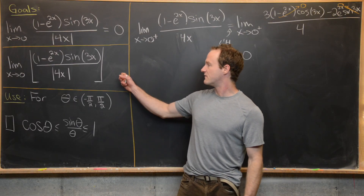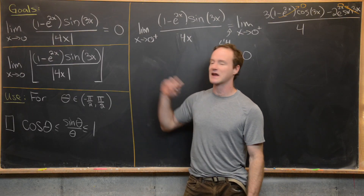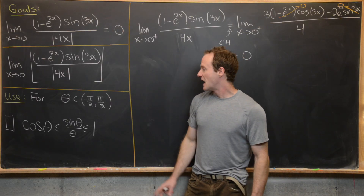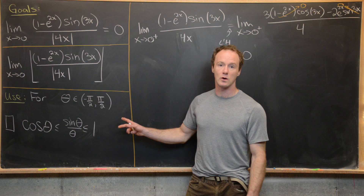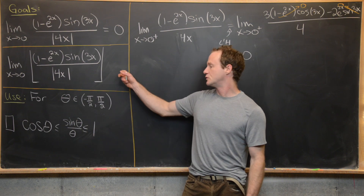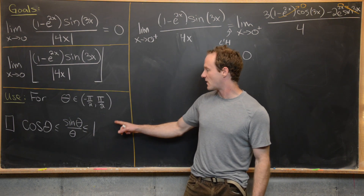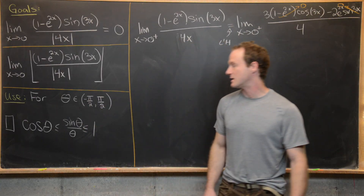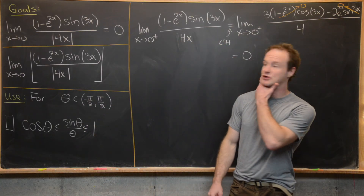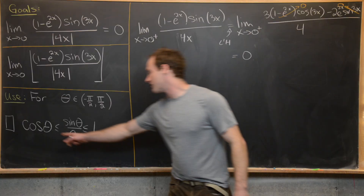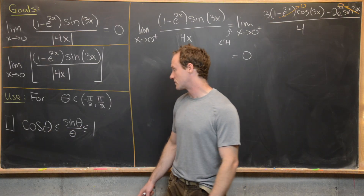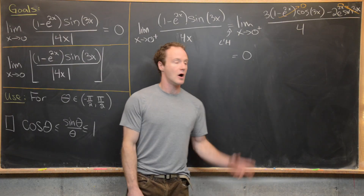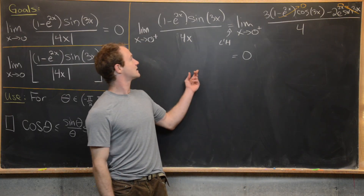Now we're ready to look at the second limit, which is the same function but with a floor. We're going to need a tool to evaluate this: the following geometric fact. For θ between −π/2 and π/2, we have cosine θ ≤ sine θ / θ ≤ 1.